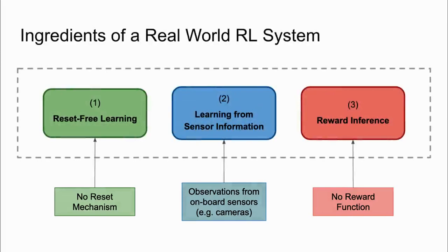We propose that a real-world robotic RL system should be able to learn in the absence of resets, learn directly from the robot's own sensor information, and learn from rewards inferred by the robot itself. Each component of the system offers its own challenges, and in fact these challenges compound when combined.